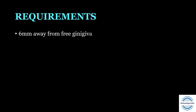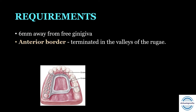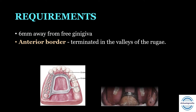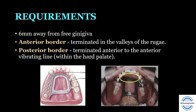The next requirement of the maxillary major connector is that the border will always be 6 mm away from the free gingiva — it should be parallel with 6 mm clearance. Regarding design, the anterior border should always be terminated in the valleys of the rugae so that it is least noticeable to the tongue. The posterior border should always be terminated anterior to the anterior vibrating line, meaning the major connector will always end within the hard palate. This is just opposite to complete dentures, where extension is on the soft palate.